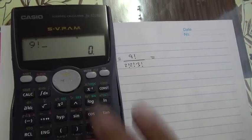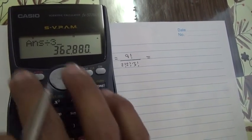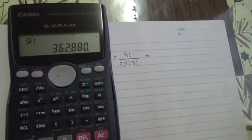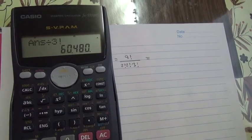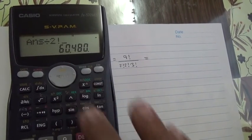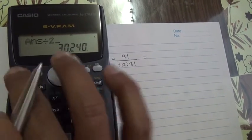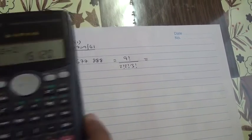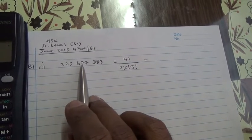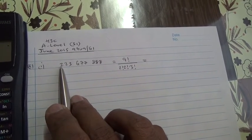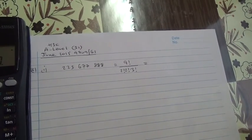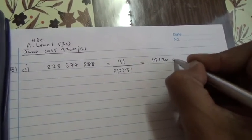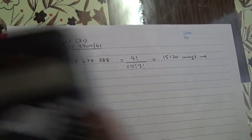Therefore, 9 factorial divided by 3 factorial, divided by 2 factorial, divided by 2 factorial. Counting the 9 numbers: 1, 2, 3, 4, 5, 6, 7, 8, 9 — 9 numbers. That's going to be 15,120 ways. That's the answer for part A.